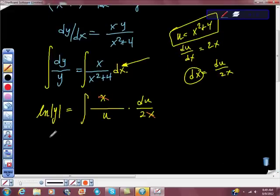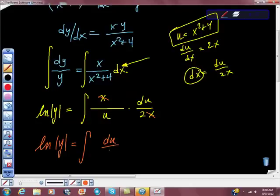Let's look at this one more time. So we get ln of absolute y is equal to the indefinite integral of du over u. If I multiply this back, I get du here, but this is also 1, so I get 1 half, don't I?